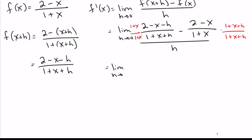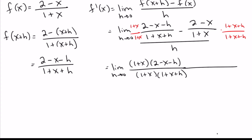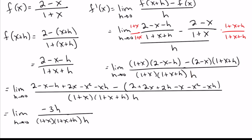On top we've got (1 plus x)(2 minus x minus h) over (1 plus x)(1 plus x plus h). We already have the common denominator, so we can stick this into one fraction and we're still dividing by h on the bottom. We leave the bottom alone because our goal is for that h to cancel later. What you see after doing that algebra is the only thing left on top is negative 3h — a negative h here and another negative 2h there — and every other term cancels out.